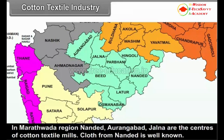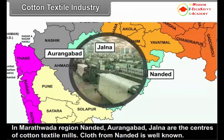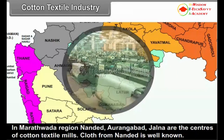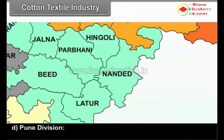C. Aurangabad Division: In the Marathwada region, Nandur, Aurangabad, and Jalna are the centres of cotton textile mills. Cloth from Nandur is well known.